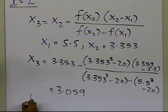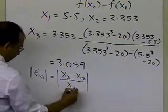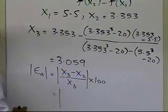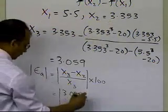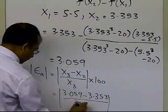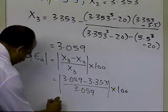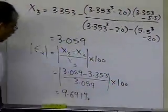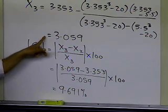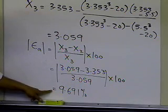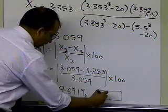The absolute relative approximate error for this iteration is: |x3 minus x2| divided by x3, times 100. x3 is 3.059, x2 is 3.353, divided by 3.059, times 100 — and this turns out to be 9.691%. So at the end of the second iteration, the estimate of the root of x cubed minus 20 equals 0 is 3.059, and the absolute relative approximate error is 9.691%. And that's the end of this example.